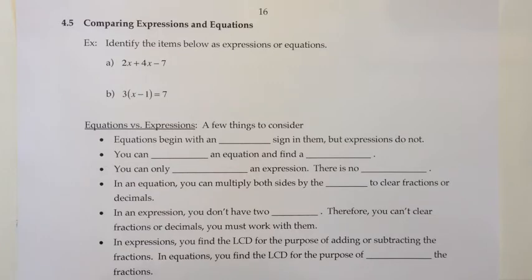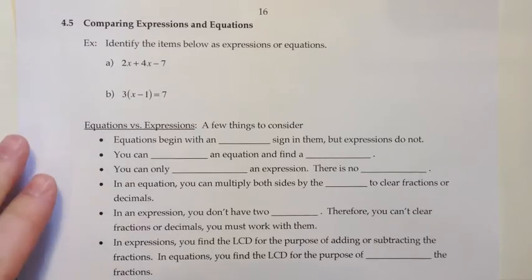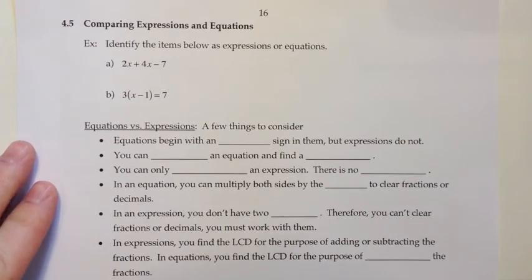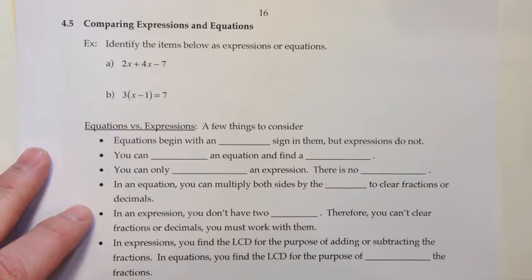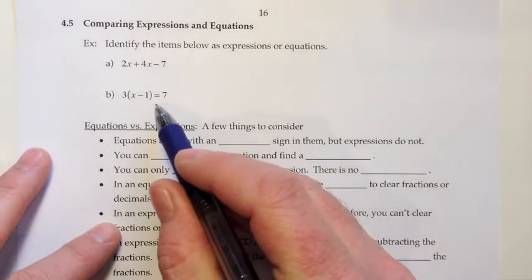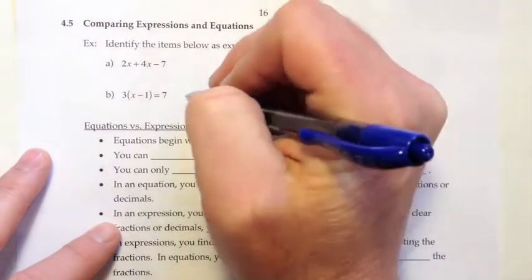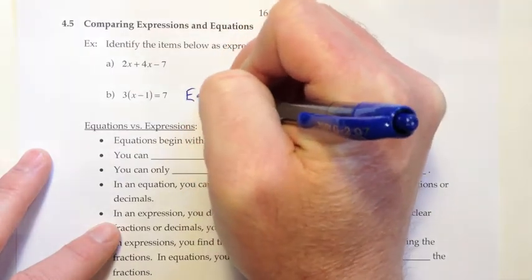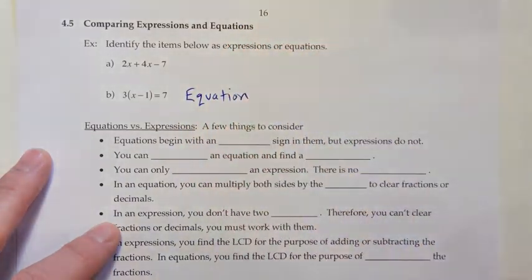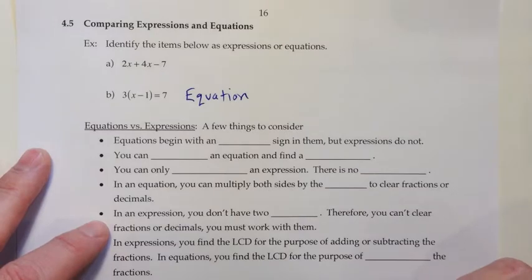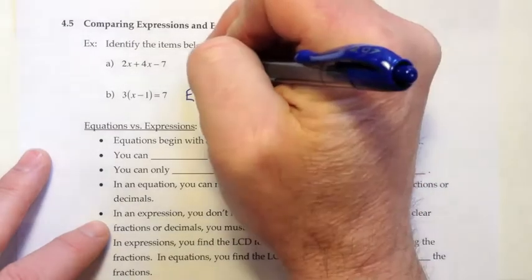We want to identify the items below as either an expression or an equation. It's actually pretty easy to do. Just look for an equal sign. If you have an equal sign, you've got an equation. If you don't, you've got an expression. We see the equal sign in Part B, so that one is an equation. We look at Part A — there isn't an equal sign there, so that one's an expression.